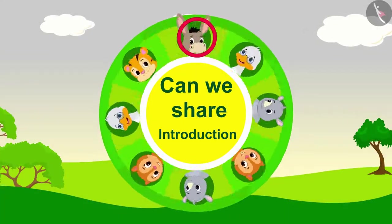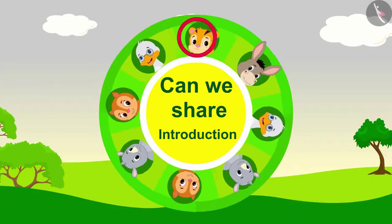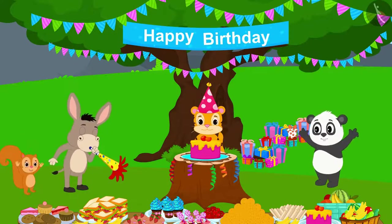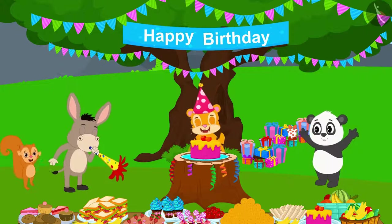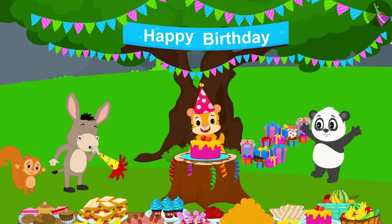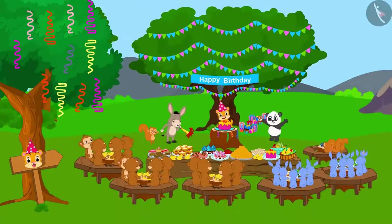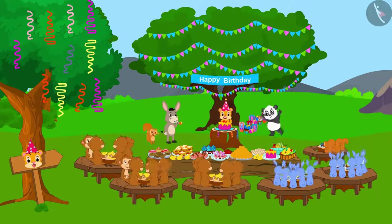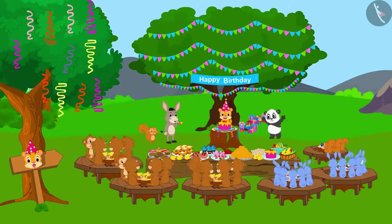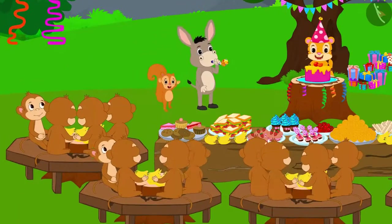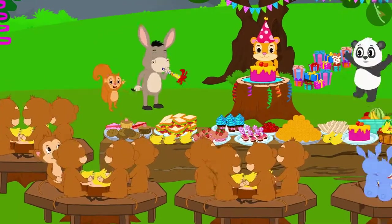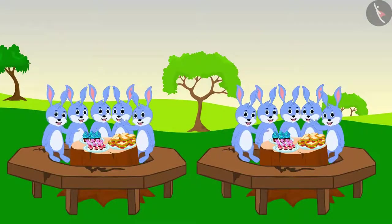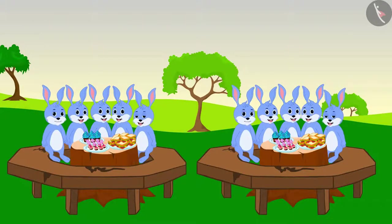Division: Equal Grouping. Today it is the king of the forest Shirkhan's birthday. All the animals of the forest have been invited for the birthday celebrations. Different animals are sitting in groups. Let us see how the rabbits are sitting.